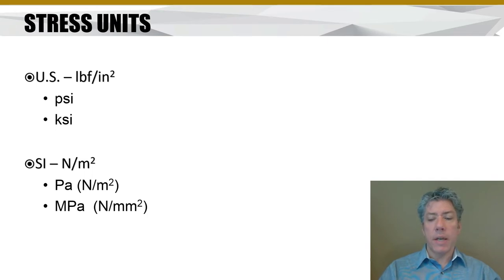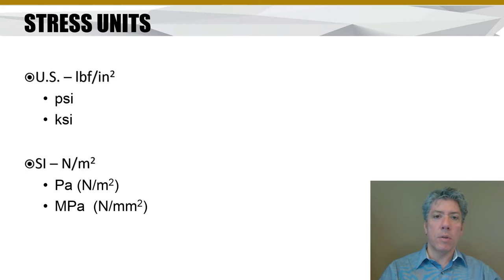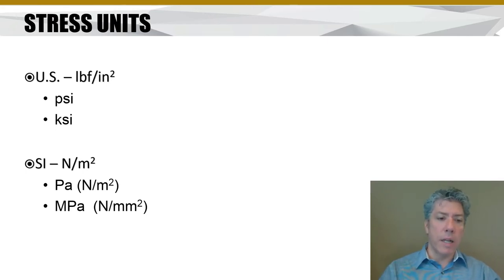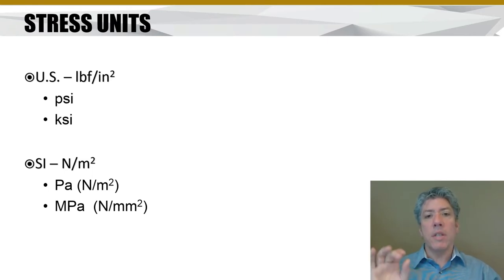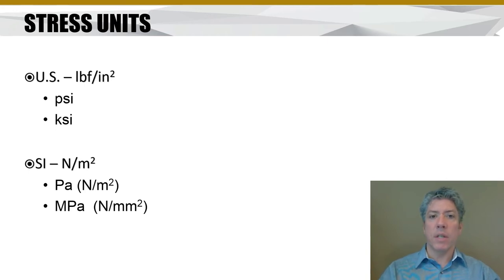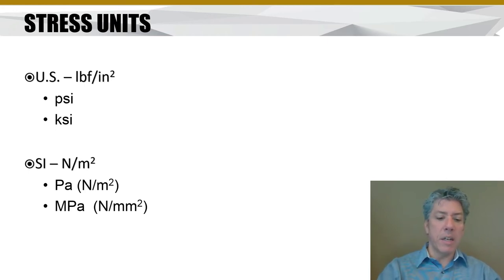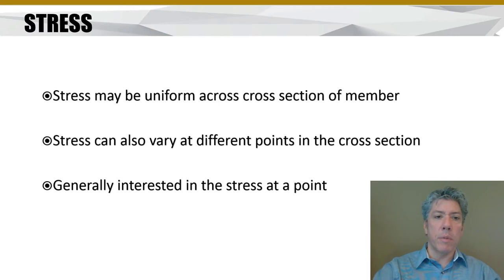It's worth writing this down - grab a pencil and paper and make a note so you can begin to memorize this. A gigapascal is a thousand newtons per millimeter squared, or a kilonewton per millimeter squared, whereas a megapascal is a newton per millimeter squared. Make a note of that so you can remember it.